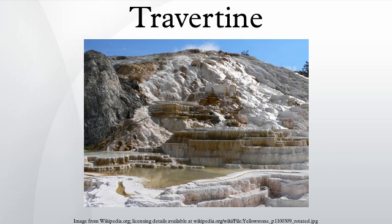Travertine has been an important building material since the Middle Ages. Travertine has formed 16 huge natural dams in a valley in Croatia known as Plitvice Lakes National Park. Clinging to moss and rocks in the water, the travertine has built up over several millennia to form waterfalls up to 70 meters in height.